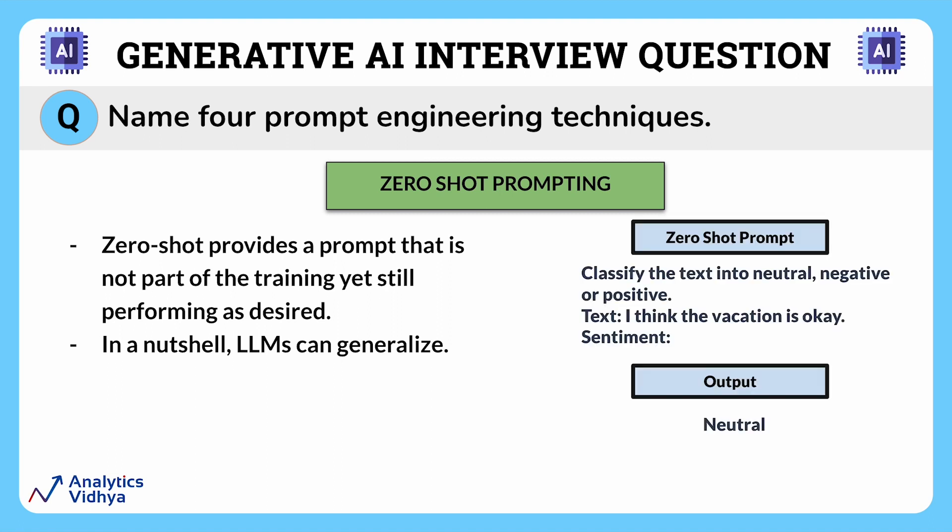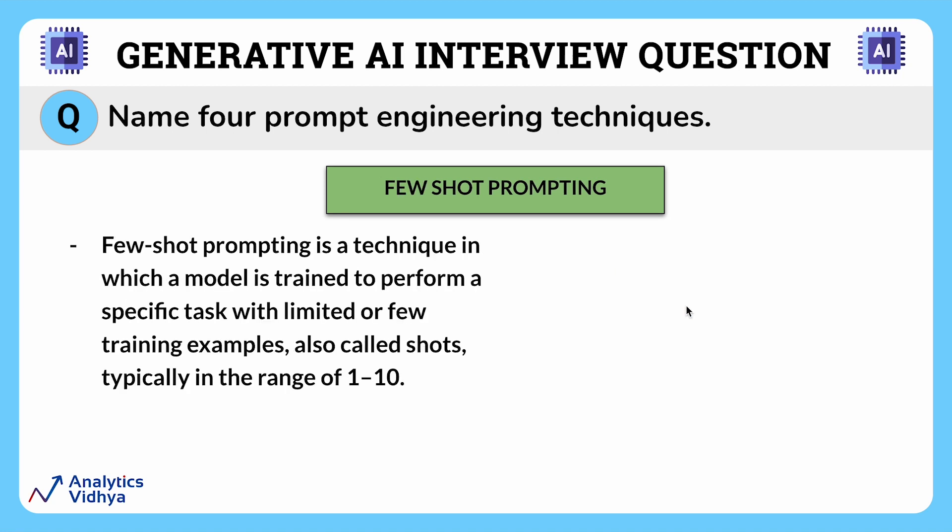This is what zero-shot prompting looks like. The next is few-shot prompting. Few-shot prompting is a technique in which a model is trained to perform a specific task with limited, or few, training examples — hence the name few-shot prompting. In few-shot learning, the model is fine-tuned on a smaller dataset of examples, often referred to as a shot.